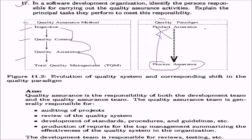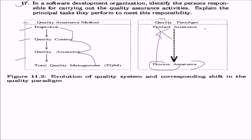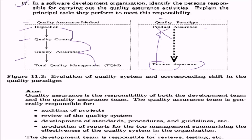In a software development organization, identify the persons responsible for carrying out quality assurance activities and explain their principal tasks. Quality assurance is the responsibility of both the development team and the quality assurance team. The quality assurance team is responsible for auditing projects, reviewing the quality system, development of standards, procedures and guidelines, and production of reports for top management summarizing the effectiveness of the quality system. The development team is responsible for reviews and testing.